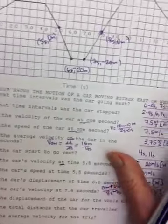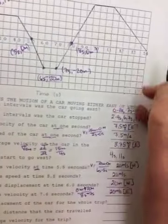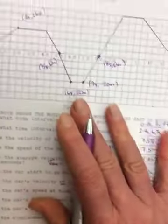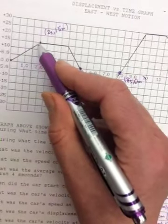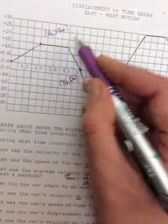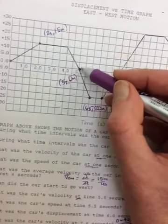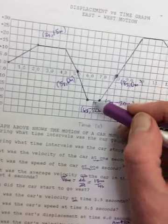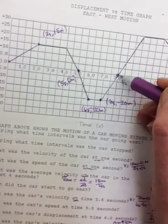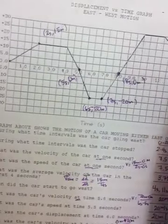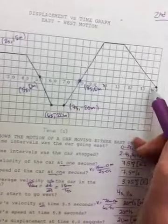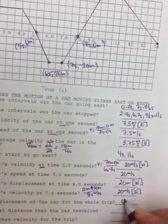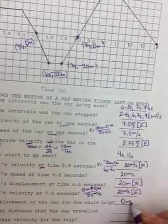What is the displacement of the car for the whole trip? It ends up back at the starting point, so that means it's zero. It went fifteen meters east, stopped, fifteen meters west, twenty meters west, stopped, twenty meters east, thirty meters east, stopped, then came back thirty meters west. The total displacement is zero meters.